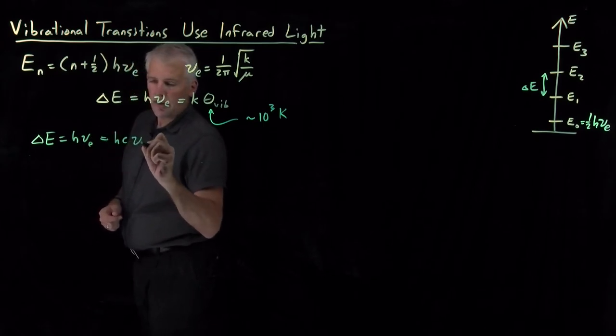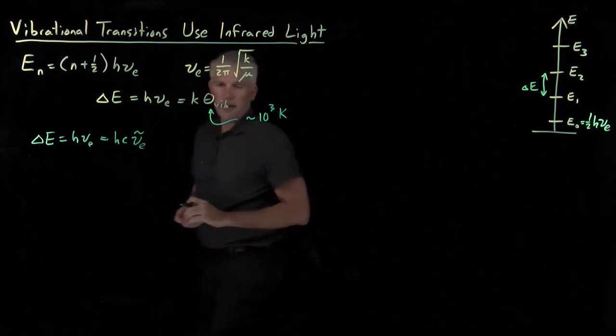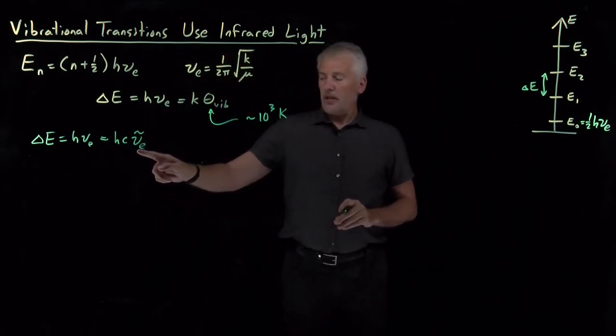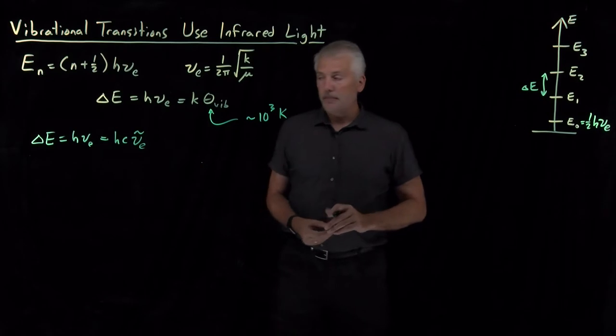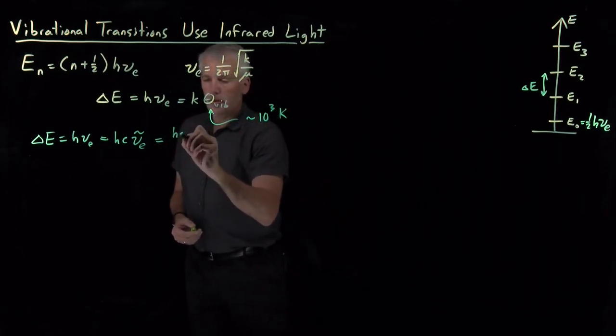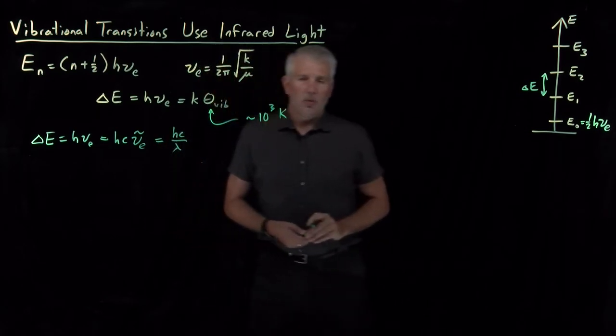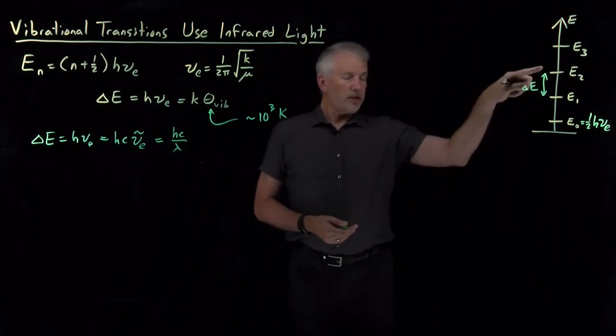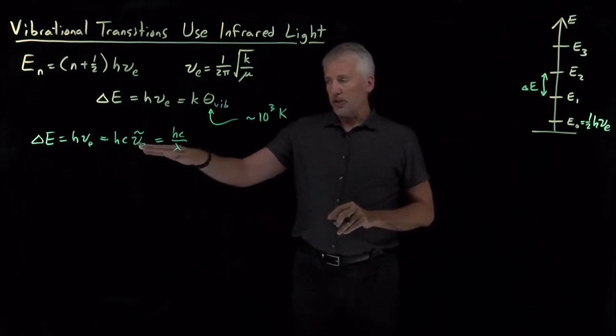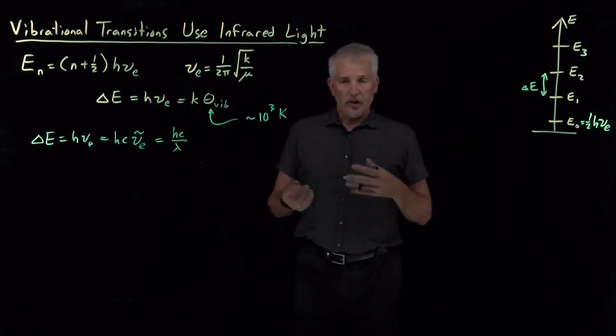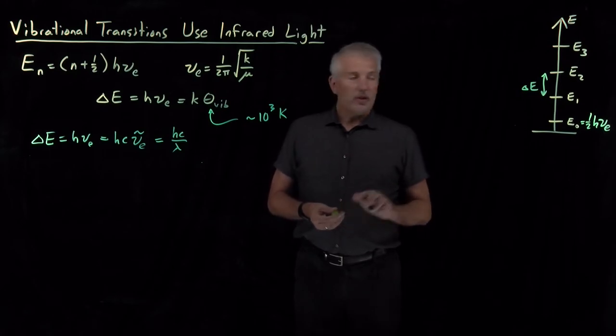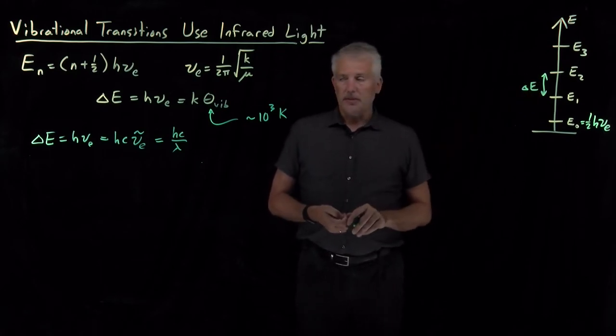Equivalently, if we'd rather have it in units of wavenumbers, what would the wavenumber of the light be? Or perhaps we want to know what is the wavelength of light needed to excite that transition? And that will tell us whether we should shine visible light, ultraviolet light, infrared light on the molecule to excite these vibrational transitions.